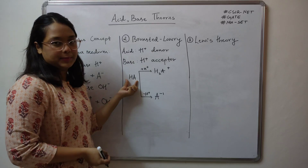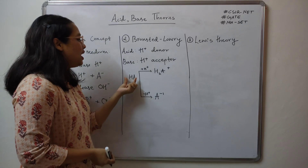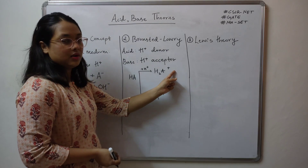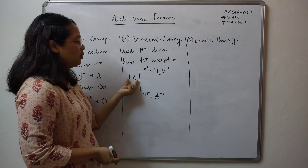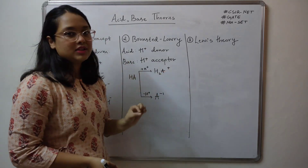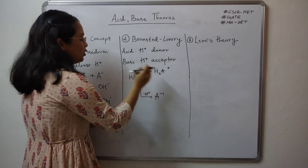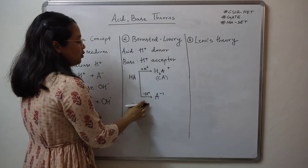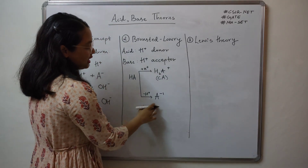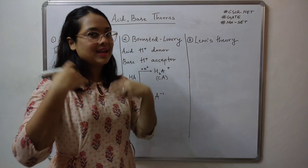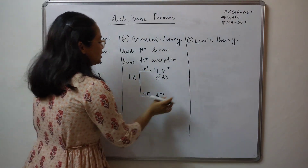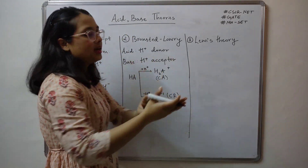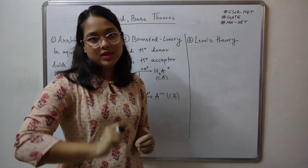Suppose your starting species is HA. If you are adding a proton to HA, it will form H2A+. Why plus? Because you are adding a positive charge — the overall neutral species now gains a proton, so you get a plus charge. When you are adding a proton, the species formed is known as the conjugate acid. If you are removing H+ from HA, you will be left with A minus — negative charge increases — and the species formed is known as the conjugate base.